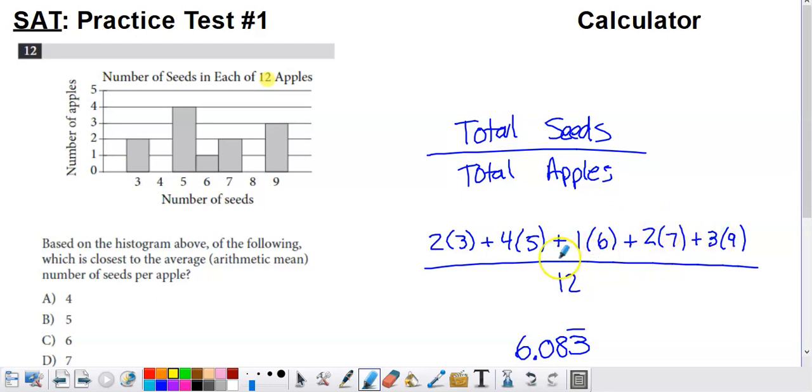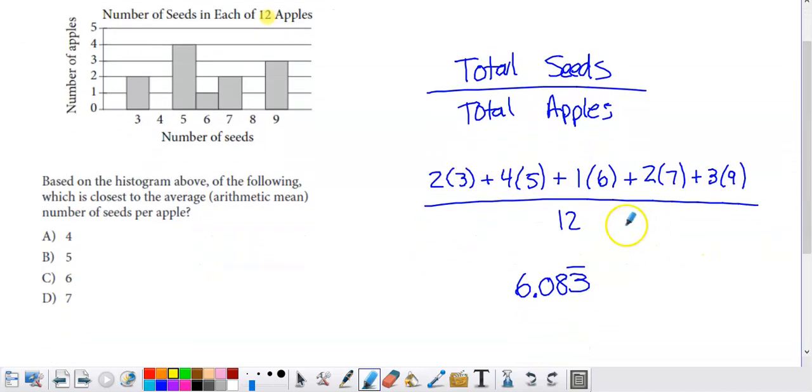The calculator is in play here, so carefully fire up the calculator. You can type in this expression to figure out what you have in your numerator, then divide that by 12. If that goes accordingly, you should get 6.083. It says which is closest to the average? Well, we're really close to six, so that is going to be the answer.